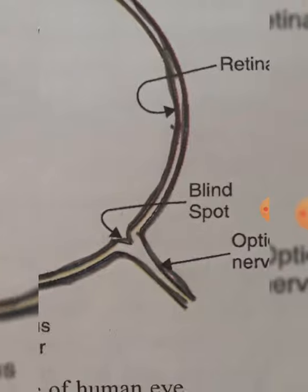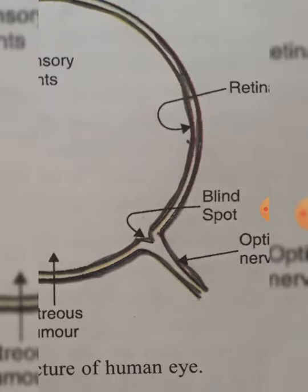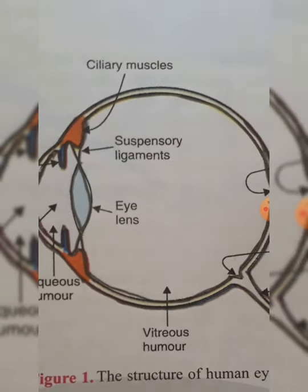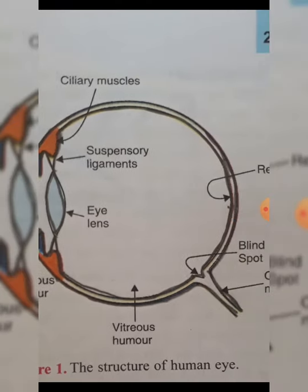Now, as you know, in most cases a convex lens forms a real and inverted image — so the image formed on the retina is inverted. But we do not see objects as inverted, because our mind interprets that image as that of an erect object. So we see objects as erect.